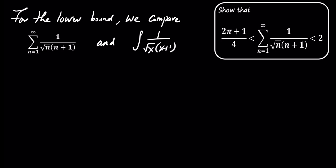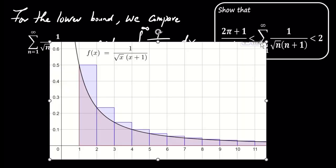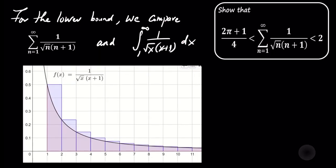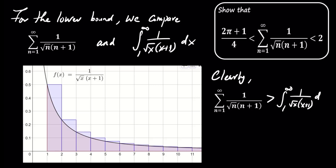We approximate the sum of 1 over the square root of n times n plus 1 using the function 1 over the square root of x times x plus 1. We compare the sum with the integral from 1 to infinity of 1 over the square root of x times x plus 1. This integral provides a lower bound for the sum.